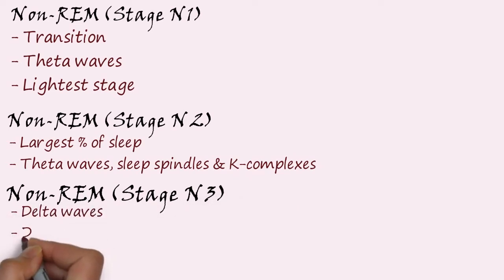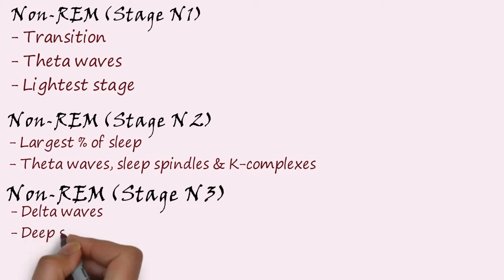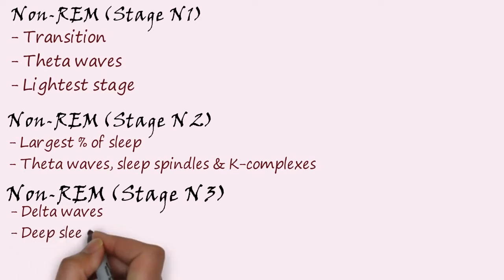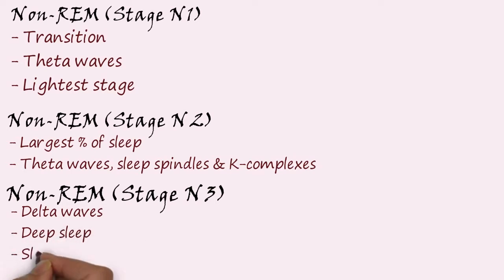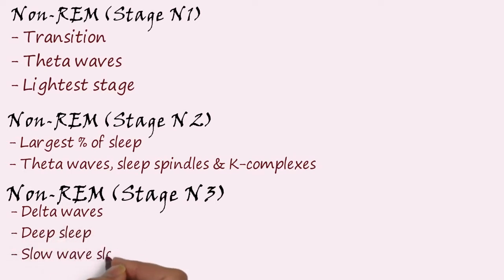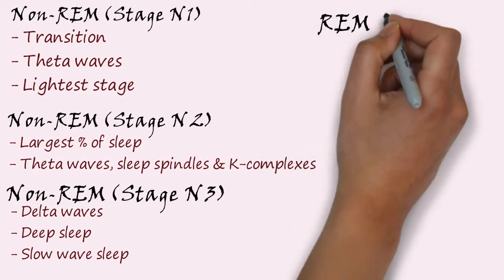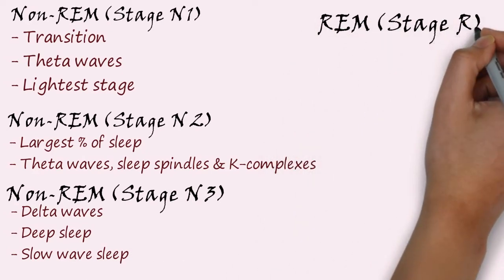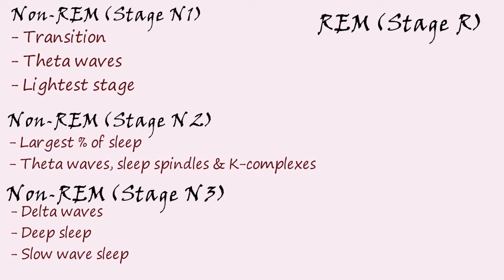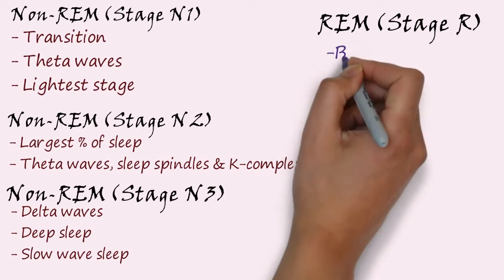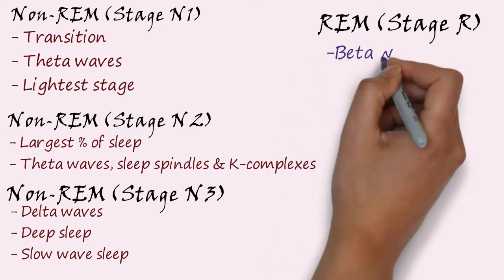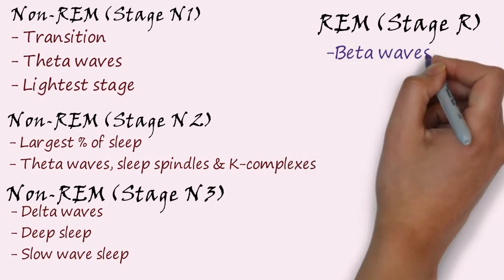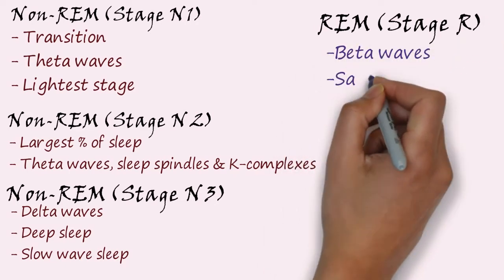Non-REM stage N3 is characterized by delta waves and is also known as deep sleep or slow-wave sleep. REM sleep, stage R, is characterized by beta waves or sawtooth waves.